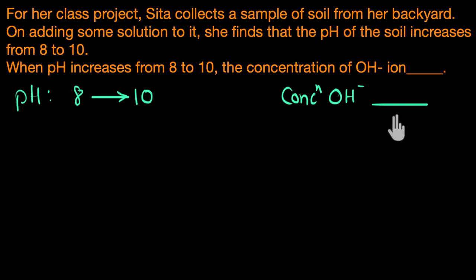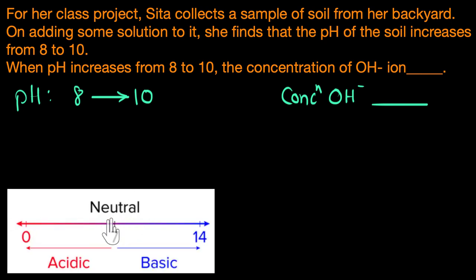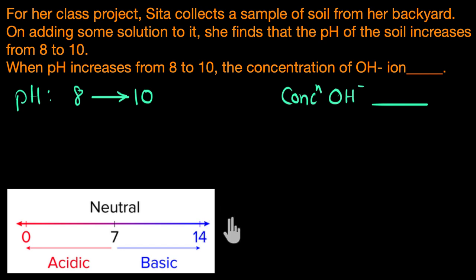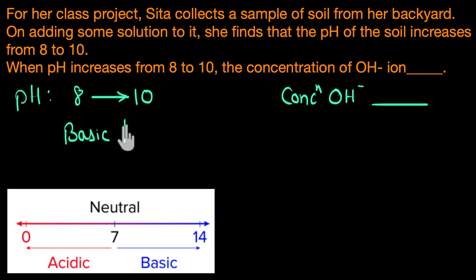Let's bring back the pH scale. We can see that 7 means neutral pH, and any pH greater than 7 means a basic solution. Our initial solution had a pH of 8, so it was basic in nature. The pH is increasing — since pH of 14 is most basic, as the pH value increases, the solution becomes more and more basic. So our soil solution is becoming more basic, meaning pH is increasing and the solution is becoming more basic.